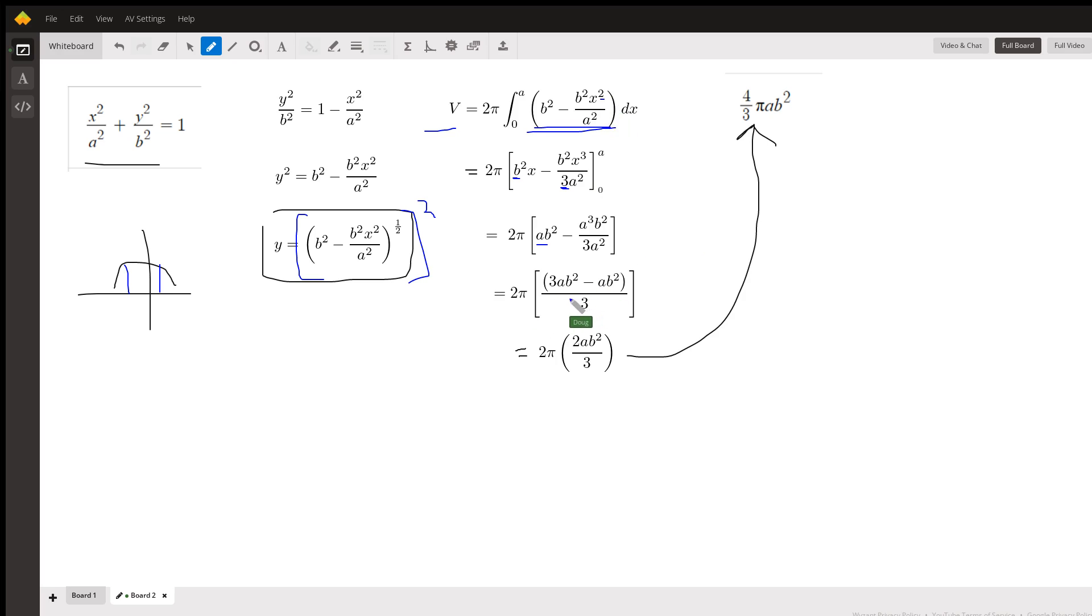And then it's a matter of algebra from there. We can get a common denominator by multiplying numerator and denominator this first term by three. These a squareds cancel out, so three a b squared minus a b squared is two a b squared over three.